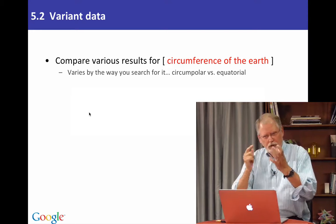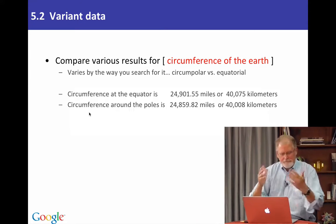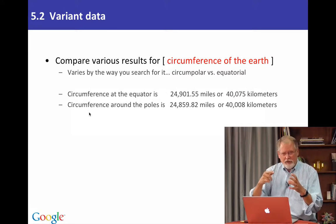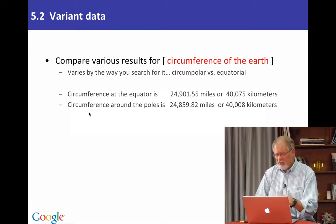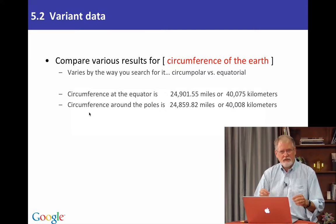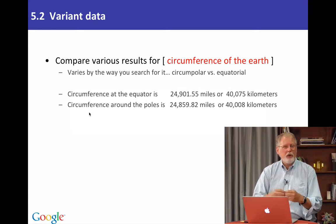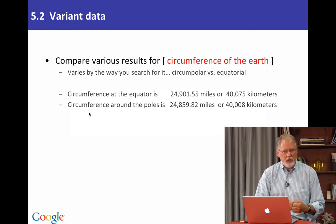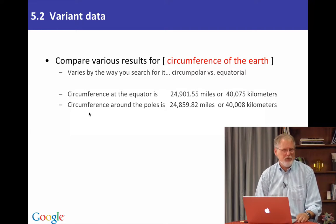Do you measure around the equator, or do you measure around the poles? Because the answers differ. If you measure one way versus the other, it's a somewhat different number. Now, admittedly, it's not a lot different — it's pretty spherical. But take into account the context of the thing you're trying to determine. That is, are there other ways to measure the same thing? Are there other ways to account for that information? What do other people think about when they think about that piece of information?